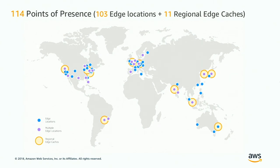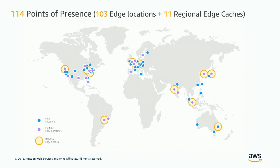Before we get into Lambda at Edge, we need to set a baseline for what Amazon CloudFront is, because that's where the Lambda at Edge functions will occur. Amazon CloudFront is AWS's global content delivery network. At its core, a CDN is a geographically distributed group of servers working together to provide fast delivery of internet content. Every one of us on a daily basis is interacting with CDNs — whether reading news articles, shopping online, watching YouTube videos, or browsing social media feeds — usually through some type of CDN accelerating that connection.